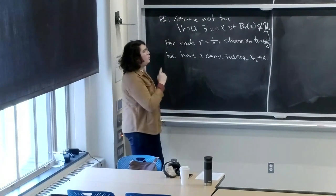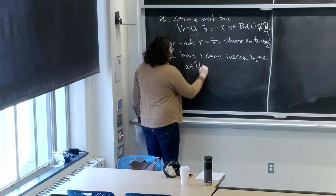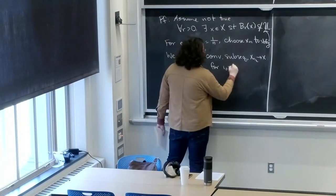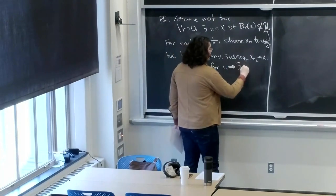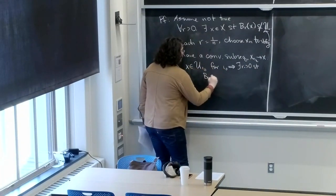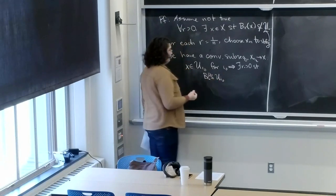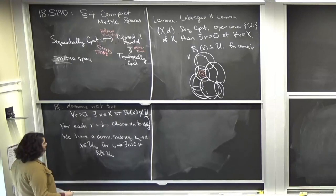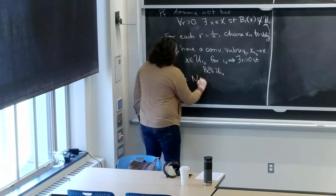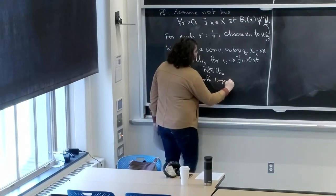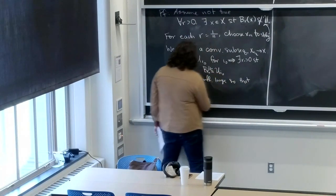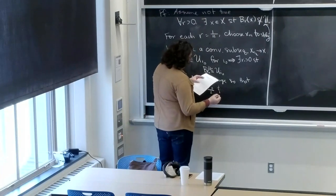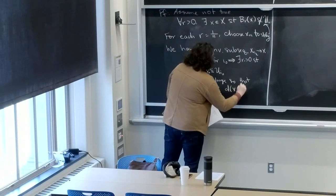We want to reach the contradiction that there is, in fact, a ball of radius r around one of these x's contained in some U_i. First, we notice that x has to be in one of the U_i's — say x is in U_{i_0} for some i_0, since it's an open cover. Because U_{i_0} is open, there exists an r_0 greater than 0 such that the ball of radius r_0 around x is contained in U_{i_0}. Now choose n sufficiently large so that 1/n is less than r_0/2, and the distance from x to x_{n_k} is less than r_0/2.